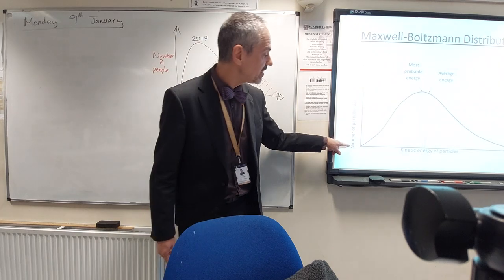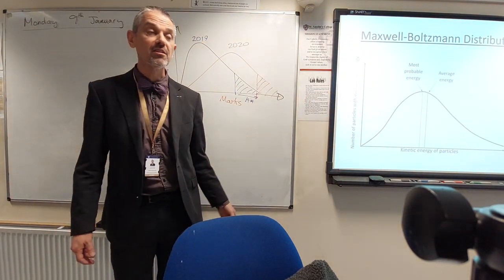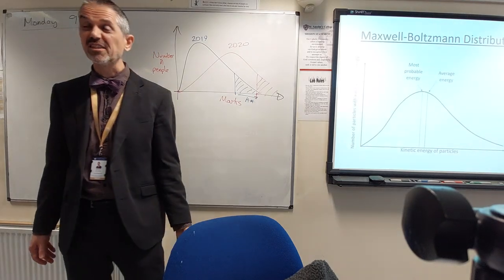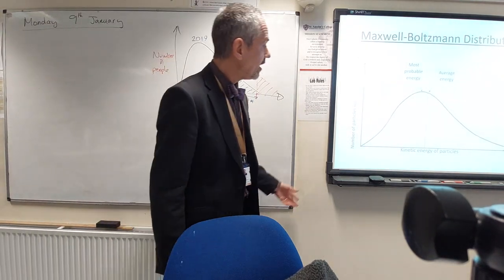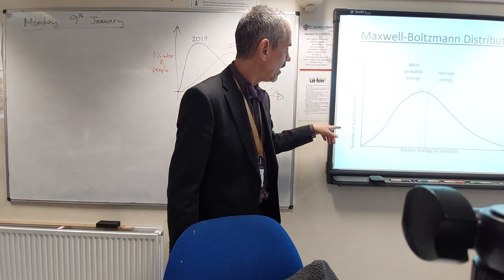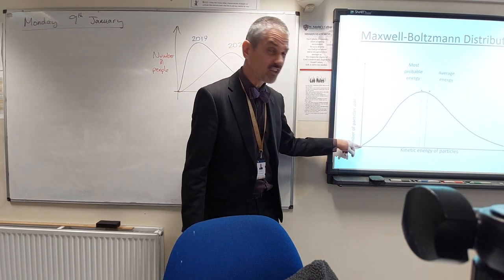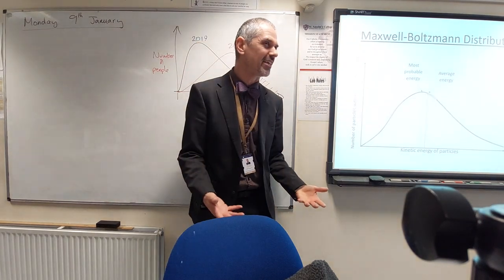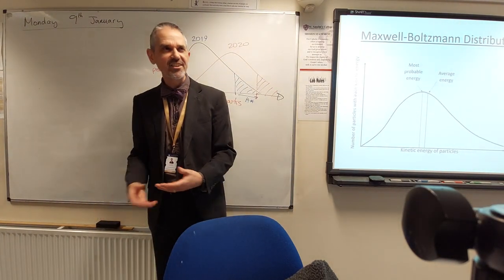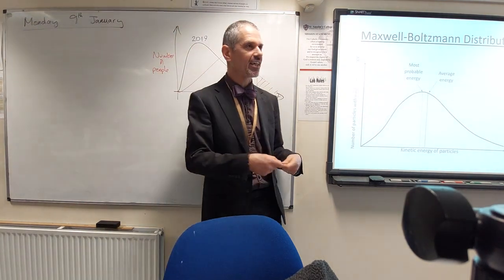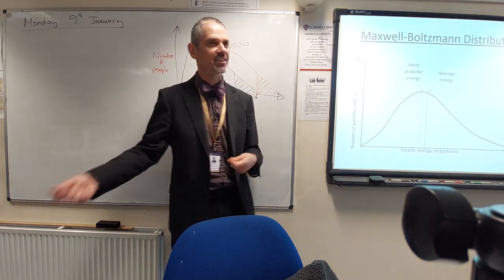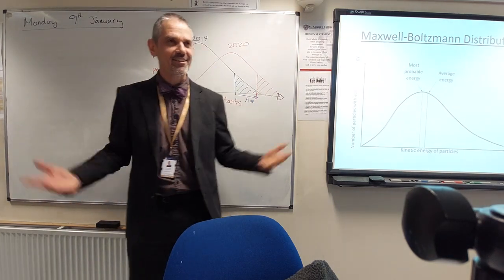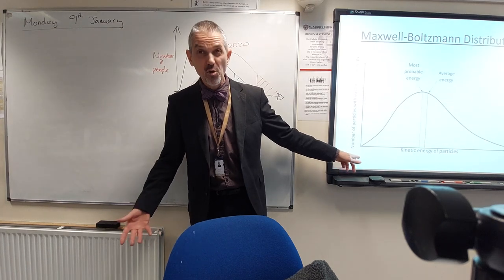The axis up here is just number of particles — or number of particles with each particular energy, to be precise. The graph will always start at zero, at the origin, so no particles have no energy. By definition you can't have anything with zero energy, because in order to lose all your energy you'd have to give it to something with less energy, and you can't get down to zero that way. So no particles have zero energy.